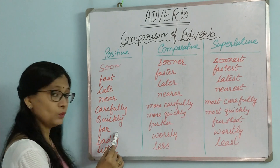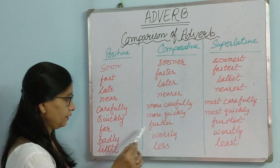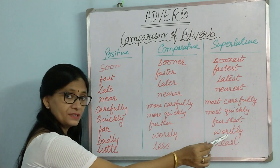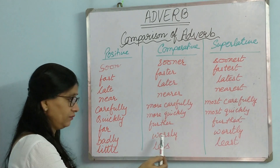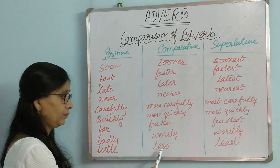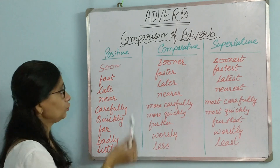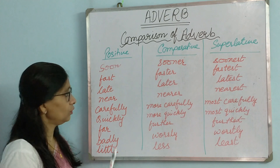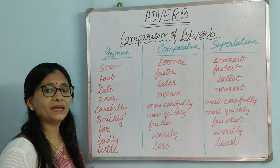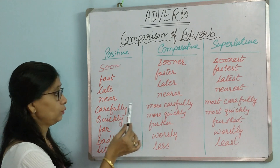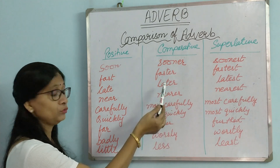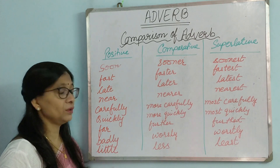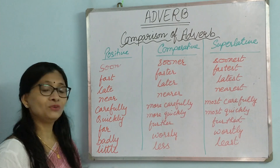Then in some cases, the words change altogether — these are irregular forms. Far becomes further and furthest. Badly becomes worse and worst. Little becomes less and least. So these are the methods for degrees of comparison in adverbs. Practice them again and again so they stay in mind — where to add more and most, where to add -er and -est, and where to change the word altogether.